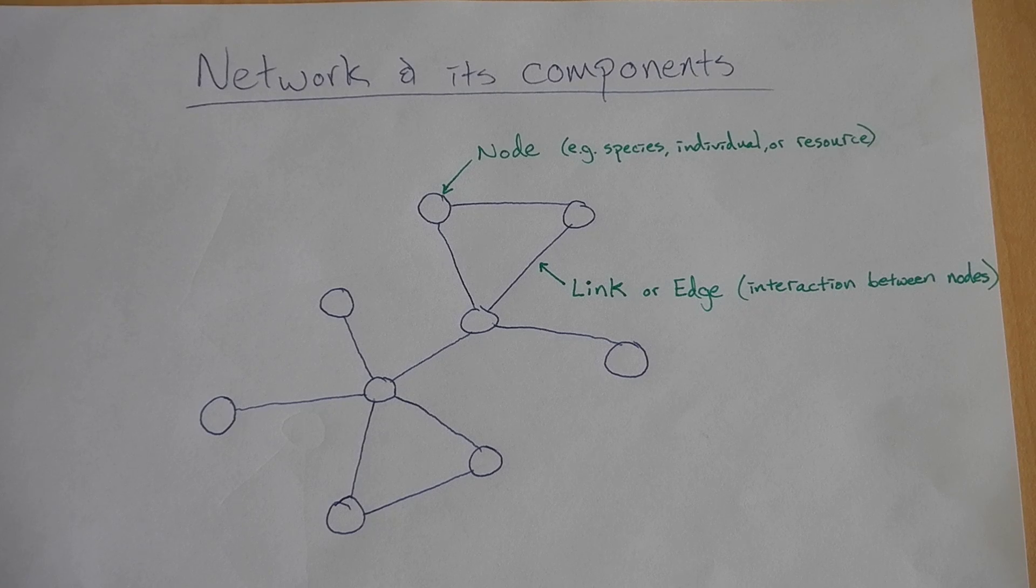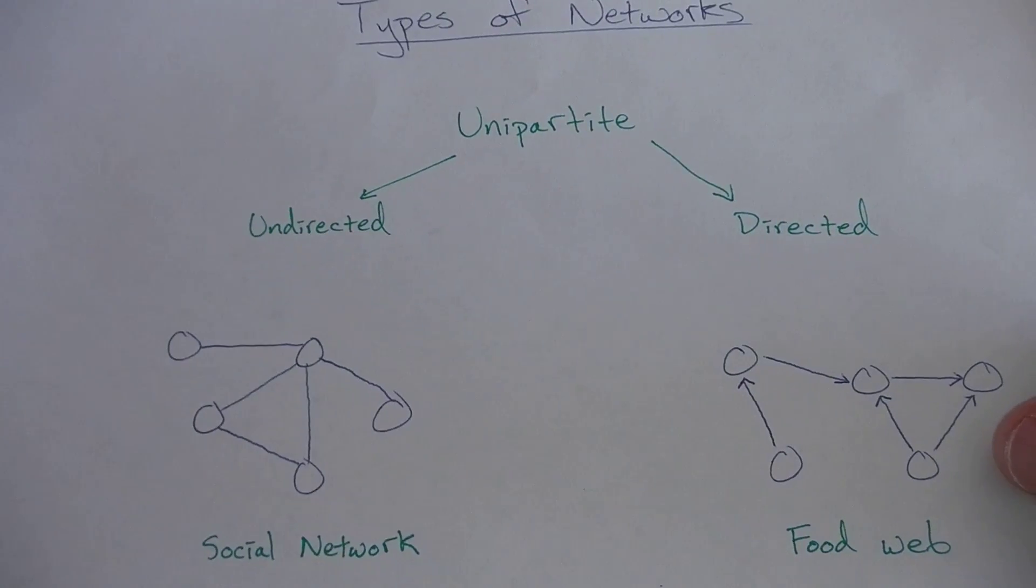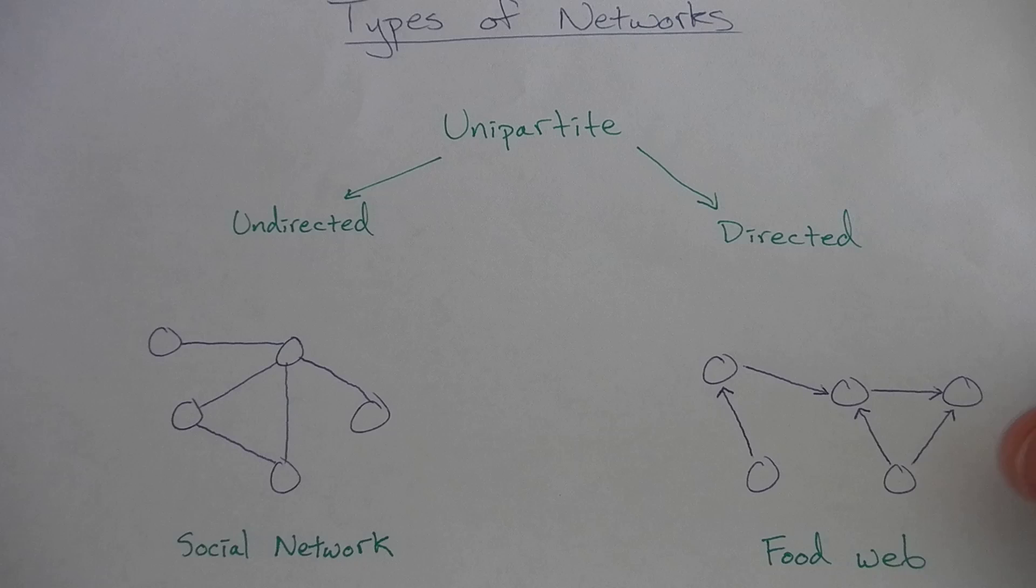So now that we know what the different components of a network are, let's talk about different types of networks. One of the types you're likely to encounter is a unipartite network.